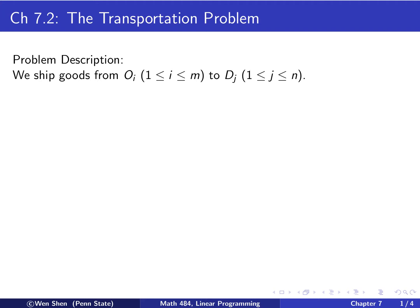Let's give the statement. The problem description is the following. We are going to ship goods from origin to destination. The origins are OI and I is labeled from 1 to M, and destination DJ, and J is labeled from 1 to N.